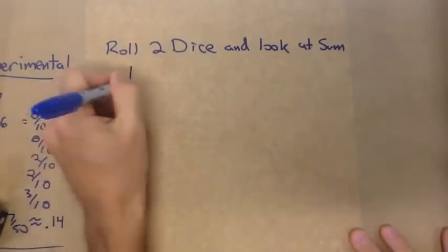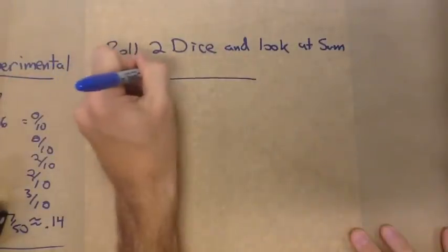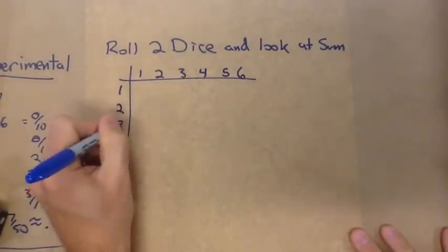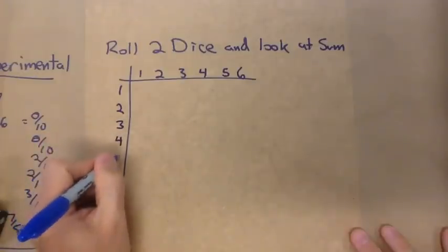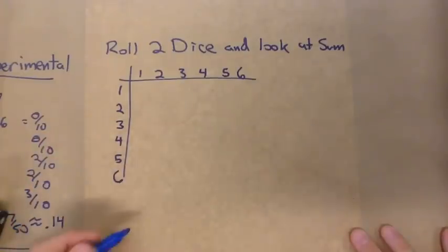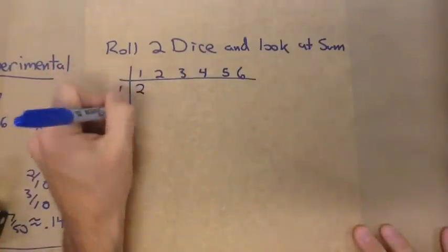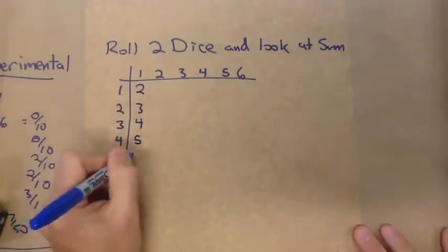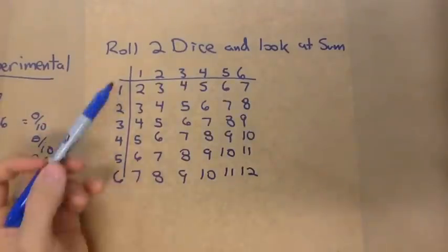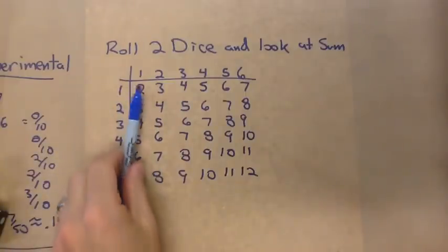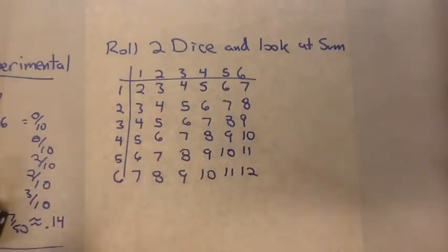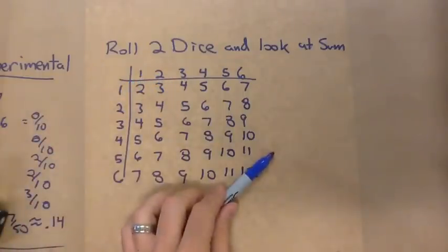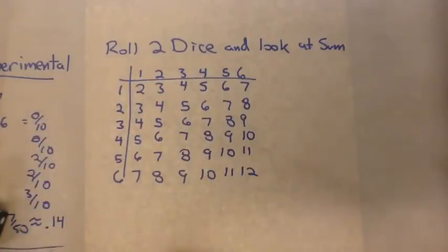We actually have a table we can draw here with all of our options. One die and the second die — we have all these sums and we can fill it in. One and one is two, and I can keep working my way through to get all possible values. Our sample space has 36 different outcomes, and the sums range from two all the way up to twelve, with different amounts for each.